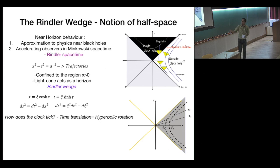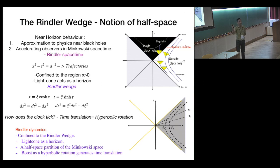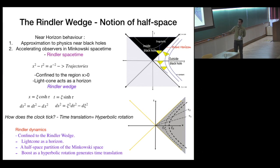The main thing we use is to ask: how does the clock tick for these observers? This is important for asking about energy content and doing quantum mechanics. The generator of time translation is the Hamiltonian. How does the clock tick in this Rindler space-time? It happens to be a hyperbolic rotation — a Lorentz boost. If you work with rapidity rather than Lorentz factors, it's a hyperbolic rotation. The key features: the Rindler wedge is confined to a particular region, the light cone acts as a horizon, and boost as a hyperbolic rotation generates time translation in this region.